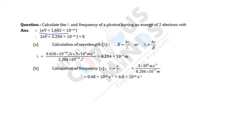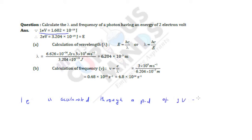The conversion: 1 electron volt is 1.602 into 10 raised to minus 19 Joules. 1 electron volt means when 1 electron is accelerated through a potential difference of 1 volt. So 1 electron volt energy is associated with it. Basically, energy is nothing but charge into the potential difference.